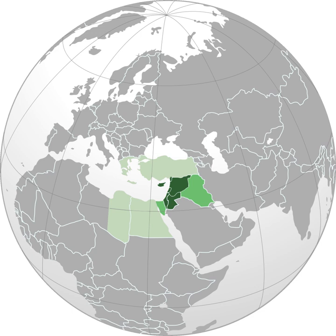Until the establishment of the modern state of Israel in 1948, Jews lived throughout the Levant alongside Muslims and Christians. Since then, almost all have been expelled from their homes and sought refuge in Israel. There are many Levantine Christian groups such as Greek and Oriental Orthodox (mainly Syriac Orthodox), Coptic, Georgian, and Maronite, Roman Catholic, Nestorian, and Protestant. Armenians mostly belong to the Armenian Apostolic Church.